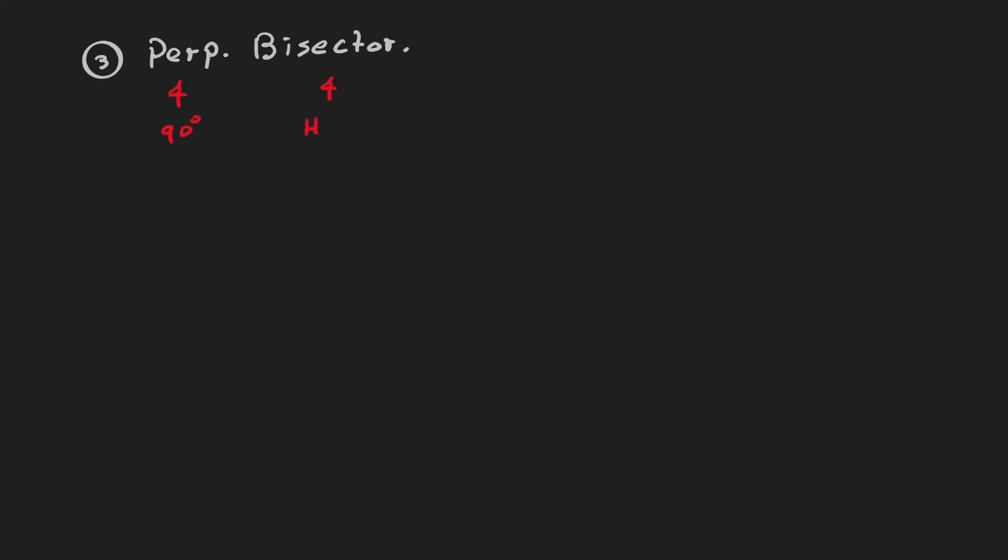So therefore, a perpendicular bisector should have these two properties. The intersection should be of 90 degrees and it should cut the line in half. So now let's illustrate this idea.